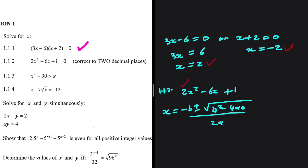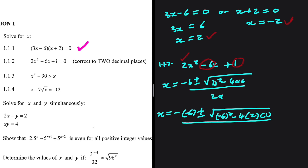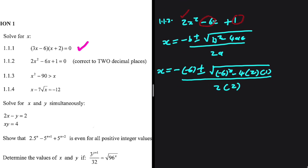2 is the value of a, minus 6 is b, and 1 is c. If we substitute, we're going to have x equals minus of minus 6, plus or minus the square root of minus 6 squared, minus 4 multiplied by 2, multiplied by 1, everything divided by 2 times 2. So x equals 2.82 or x equals 0.18. These are the values of x, correct to two decimal places. Quite an easy one — we're just substituting into the quadratic formula.